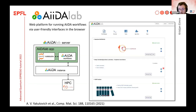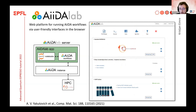Here is a quick overview of the AiiDAlab home page. When you log in, every app has a box on the home page — for example the Quantum ESPRESSO app, a graphene nanoribbon app, and the SSSP app. Importantly, there is a link to the app store where you can install apps published by the community with a single click. If anybody comes up with a new app idea, it can be directly installed from here.